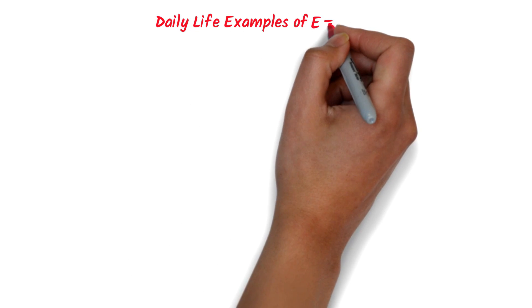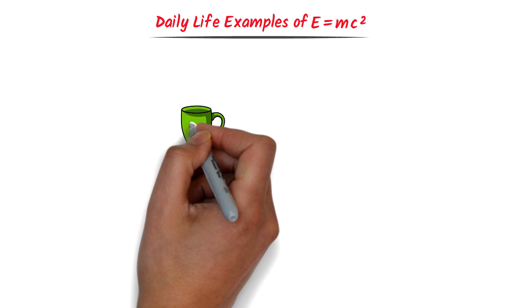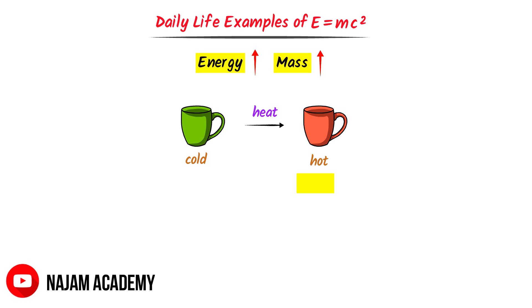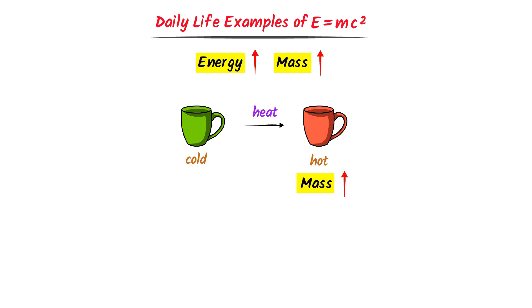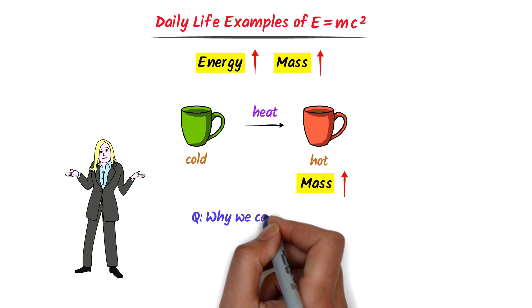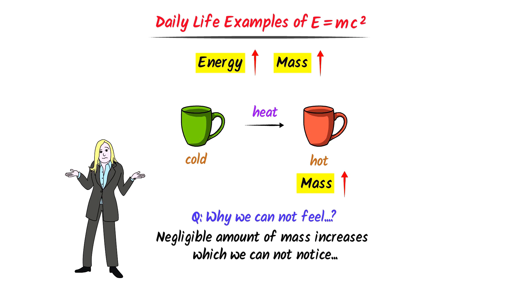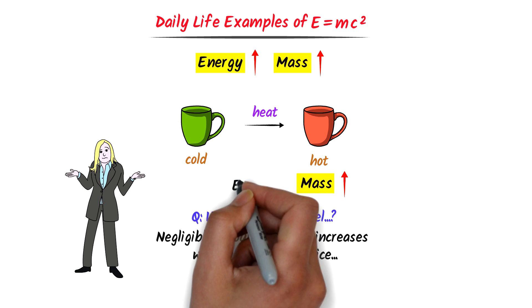Now let me teach you the daily life examples of E equals mc squared. Consider this cup. If I increase the temperature of this cup by adding some heat, we have increased the energy of this cup. Remember that when we increase the energy of an object, its mass also increases. So the mass of the cup is increased due to adding energy. You may be thinking: why we cannot feel the increased mass of the cup? It is because a negligible amount of mass increases, which we cannot detect or notice in daily life. But we can calculate this negligible increased mass using E equals mc squared.